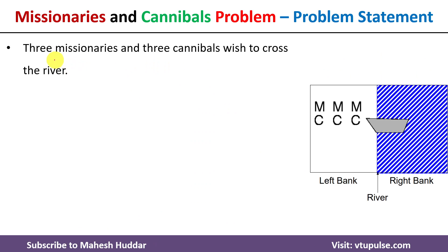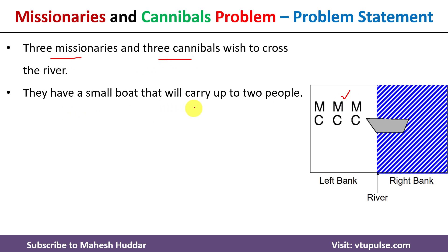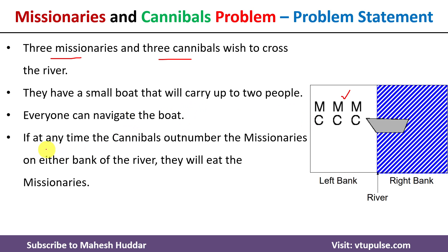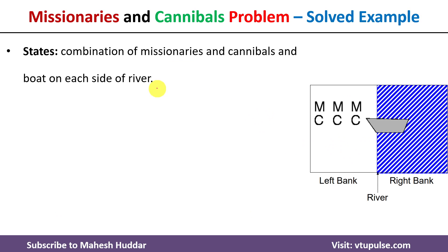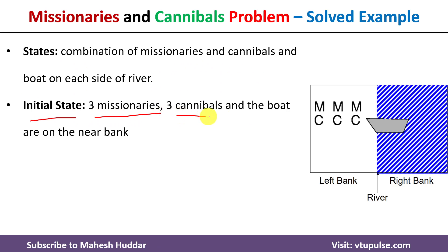In the missionaries and cannibals problem there are three missionaries and three cannibals. They have a small boat that can carry up to two people, so that the missionaries and cannibals will go from one bank of the river to the other side. Anyone can take the boat to navigate. At any point in time, if the number of cannibals outnumber the missionaries, the cannibals will eat up the missionaries. The initial state is three missionaries, three cannibals, and the boat on the left side of the bank.